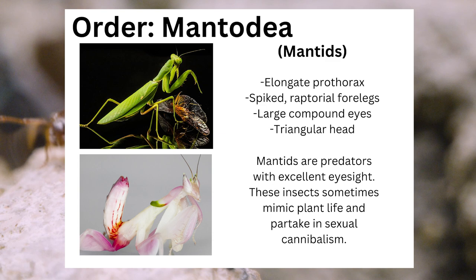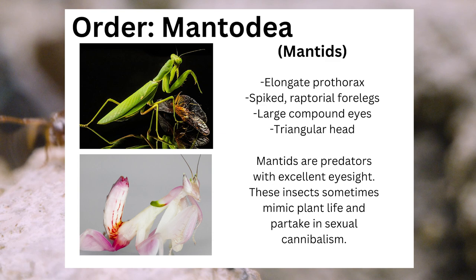The order Mantodea, containing the mantids, can be identified through their elongate prothorax, their spiked raptorial forelegs, their large compound eyes, and their triangular heads. Mantids are predators with excellent eyesight. These insects sometimes mimic plant life and partake in sexual cannibalism.